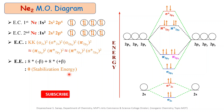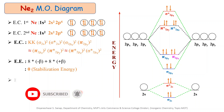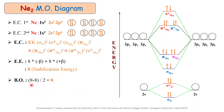The next important point is the calculation of bond order. Bond order is calculated using the formula: (number of electrons in bonding molecular orbital minus number of electrons in antibonding molecular orbital) divided by 2. After putting the values, we get (8 − 8) / 2 = 0. That is why there is no bond formation between the two neon atoms — there is no bonding.